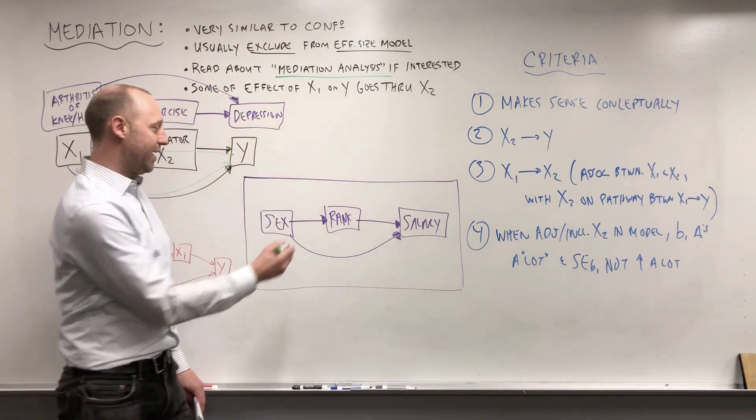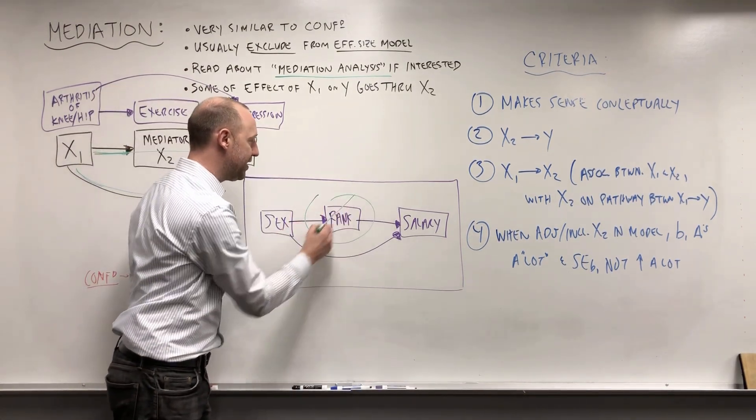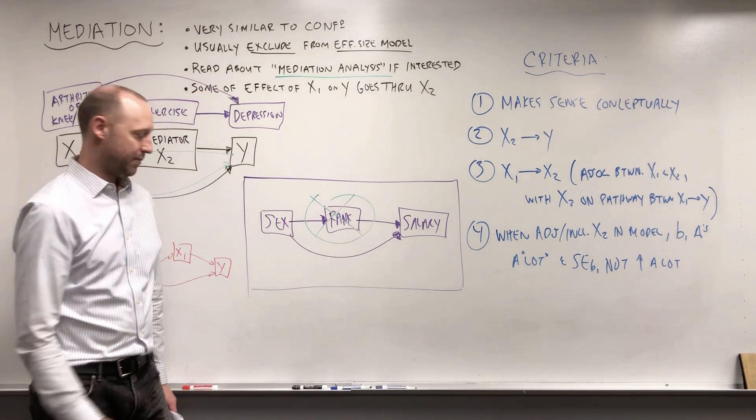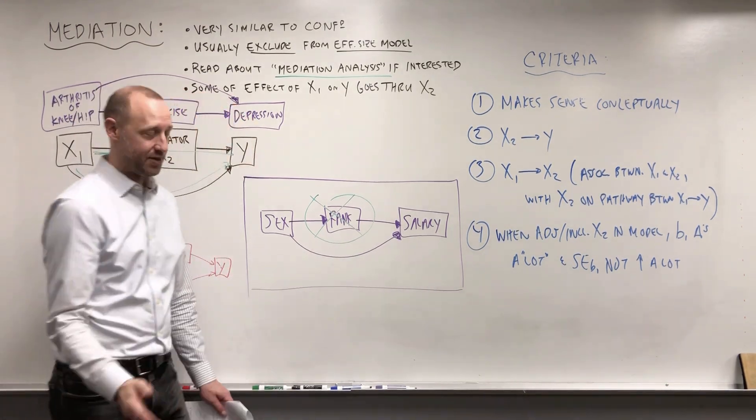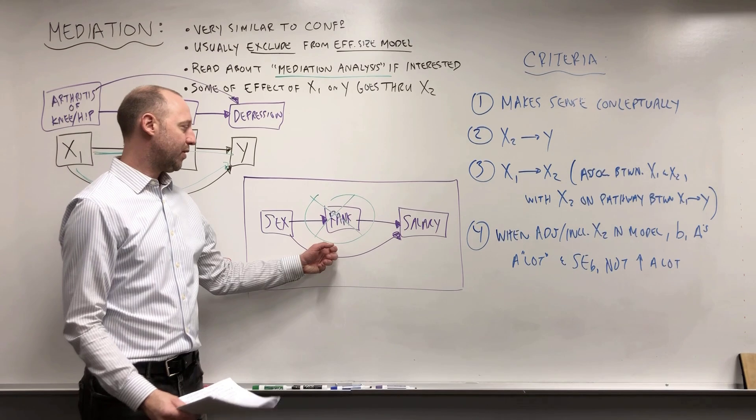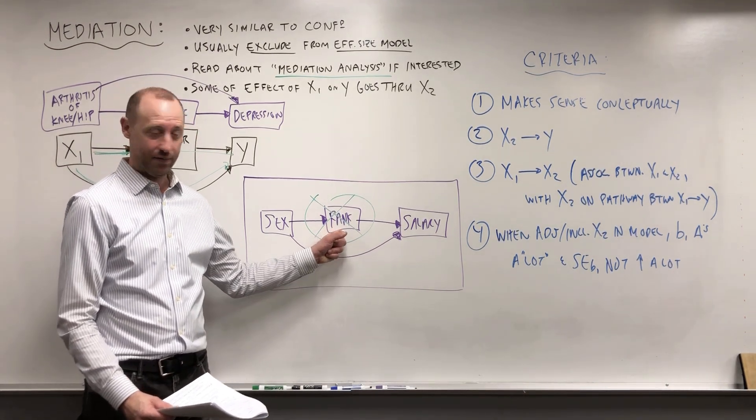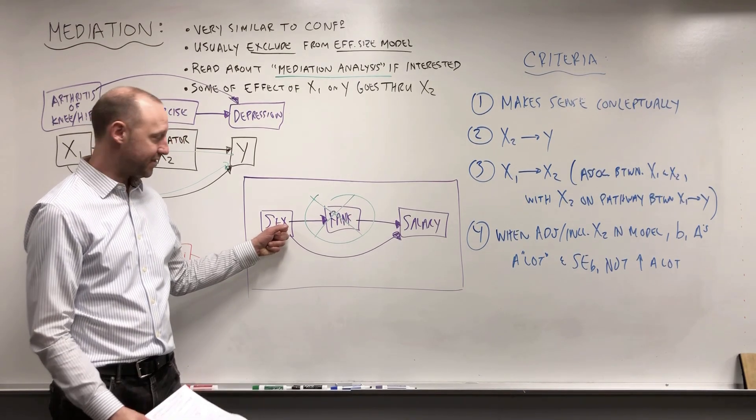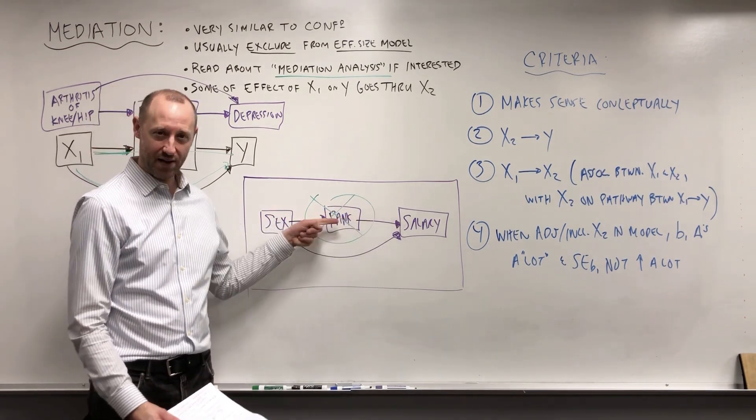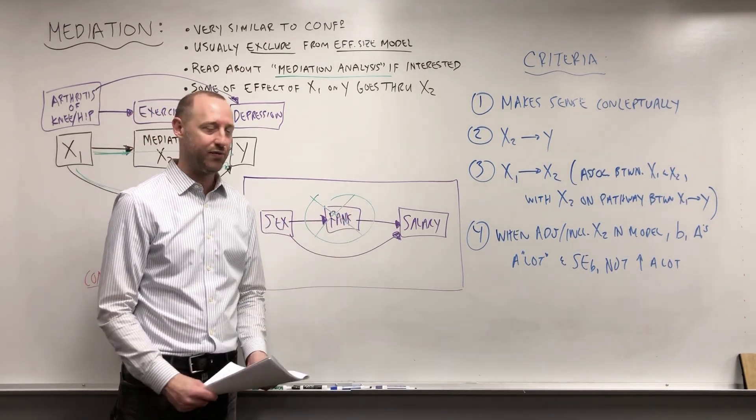And so in the court case, they said that this variable needs to be removed from the analysis because that's part of the way that the discrimination is happening. And without using that term, essentially what they're saying is this is acting as a mediator. Some of the sex discrimination is going through this rank variable. And that's why it was excluded from the model.